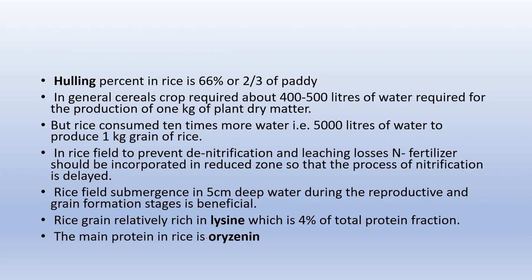Hulling percentage in rice is 66%, or two-thirds of paddy. The hull consists of lemma and palea present on the rice kernel, and the process of removing the hull is called hulling. For general cereals, 400–500 liters of water are required to produce 1 kg of grain. However, rice consumes about 10 times more water — its water requirement is 5,000 liters to produce 1 kg of grain.